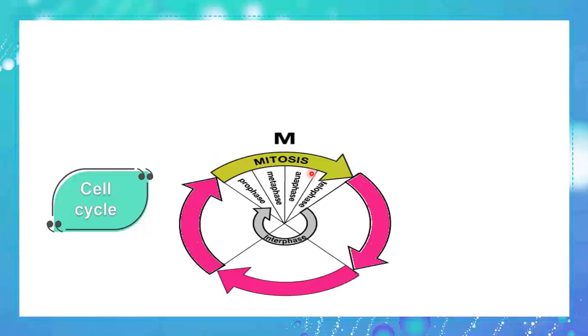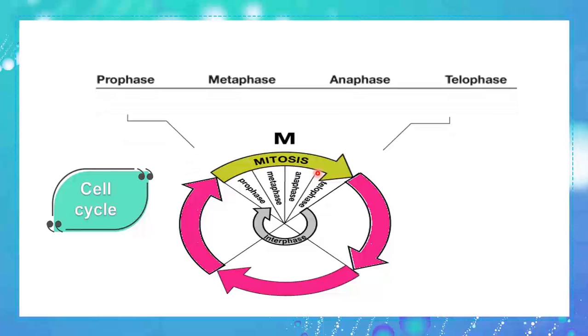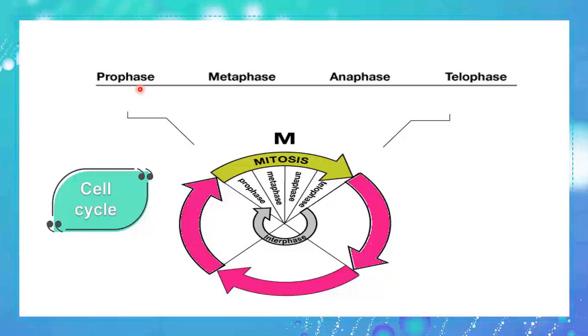In order for the cell to divide, it must pass through something known as the cell cycle, where mitosis is a small part of it. The phases of mitosis are four: prophase, metaphase, anaphase, and telophase. The rest of the cell cycle is known as interphase.